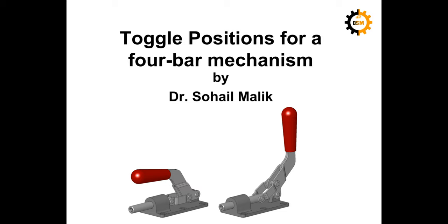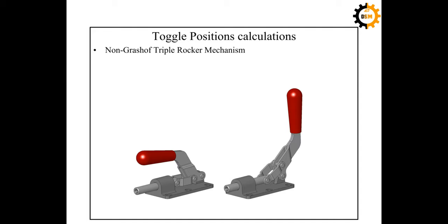Bismillahirrahmanirrahim. In this session we will find out the toggle positions for a four-bar mechanism — specifically the non-Grashof four-bar mechanism, which is a triple rocker. In a non-Grashof mechanism, no link is capable of making a full revolution, so all three moving links move to and fro and don't make a complete revolution.